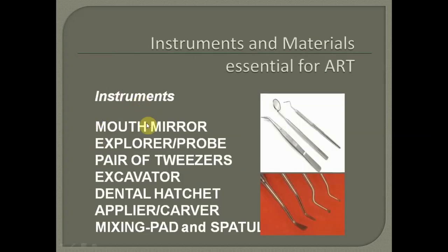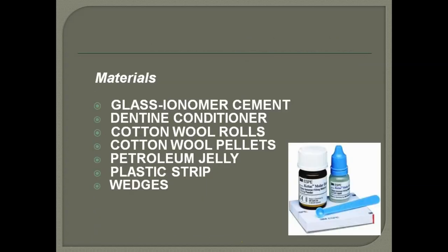The basic instruments needed for ART include mouth mirror, explorers, tweezers, excavators, and dental hatchets — the excavator and dental hatchet being the main instruments for caries removal — along with a cover, mixing pad, and spatula. The materials required include glass ionomer cement, conditioner, cotton wool rolls, pellets, petroleum jelly, a plastic strip, and wedges.